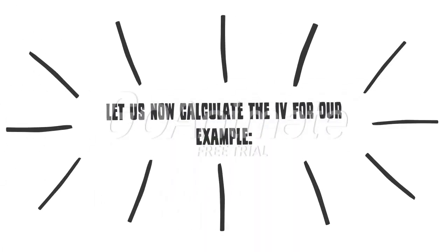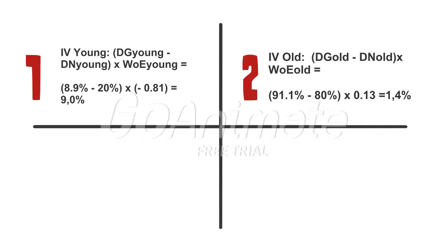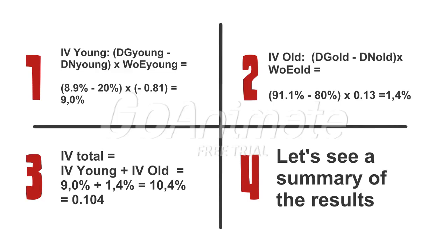Let us look at an example so we can understand how this concept really works. We have an information value for young people and for old people. We calculated before the distribution of good credit for young people as 8.9% and bad credit as 20%. When we subtract these from each other and weight by the weight of evidence for young people, we get 9%. Doing the same for old people gives 1.4%. The total information value is simply the sum of both, giving us a value of 0.1.